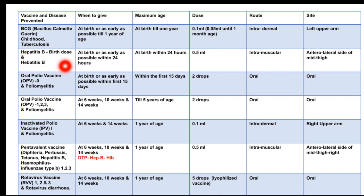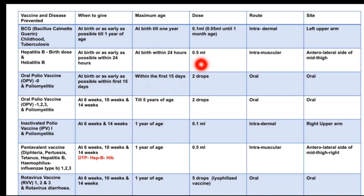The second vaccine is the Hepatitis B vaccine, which protects against Hepatitis B. It is given at birth or as early as possible within 24 hours. The dose is 0.5 ml and it is given intramuscularly to the anterolateral side of the mid thigh.